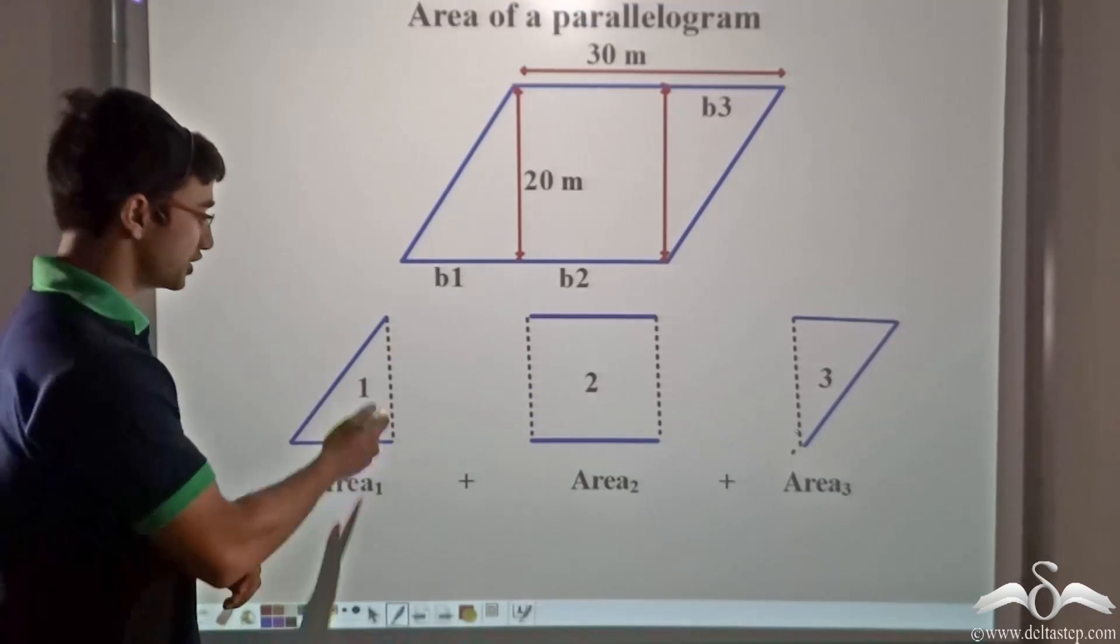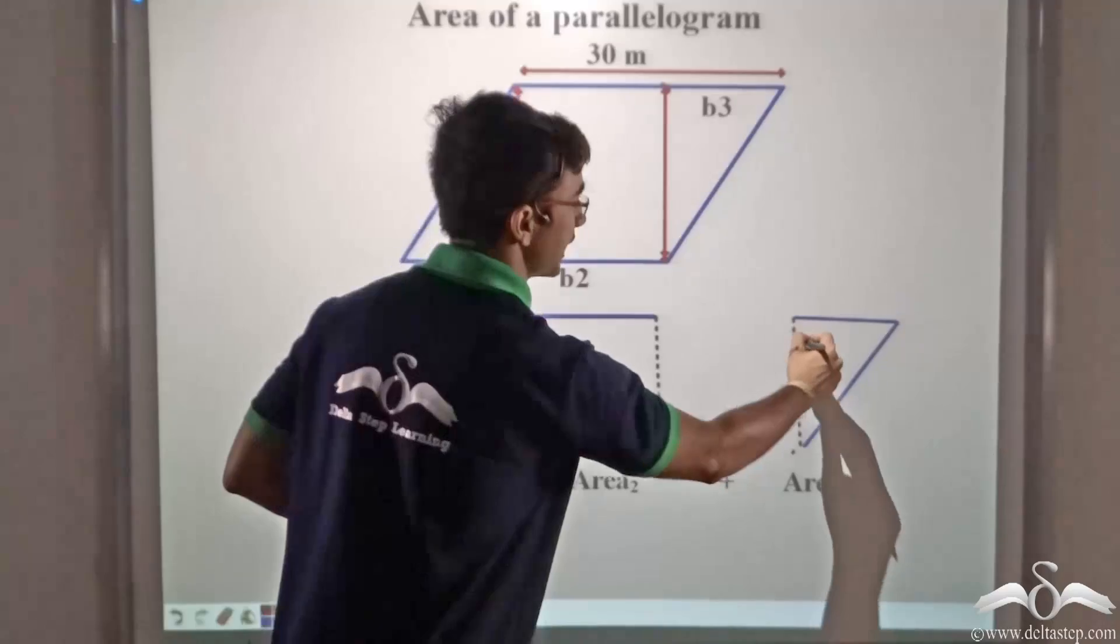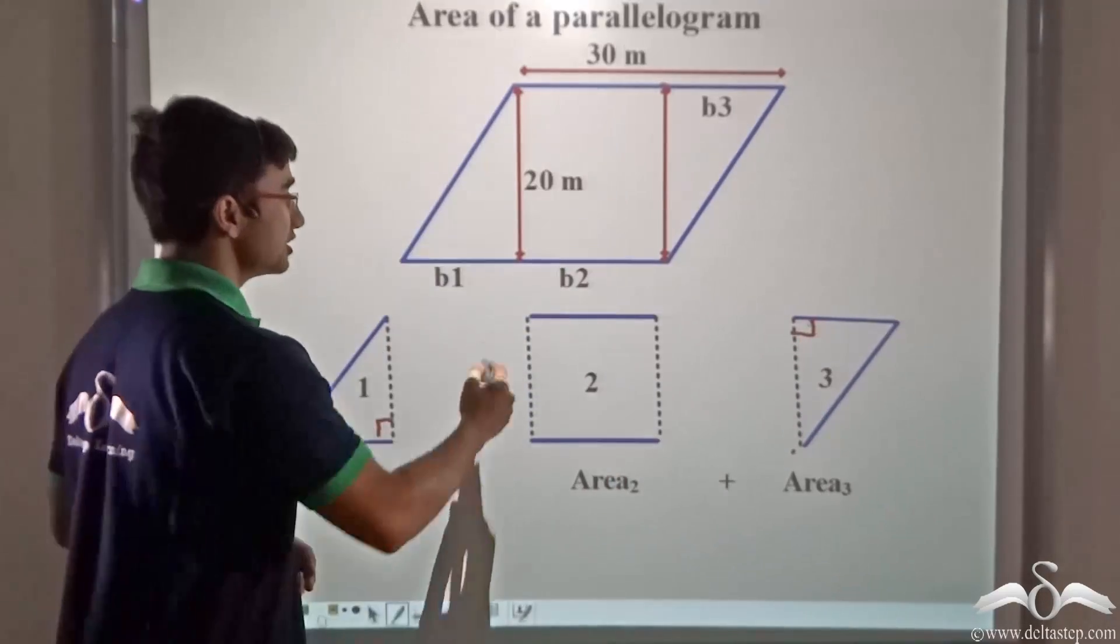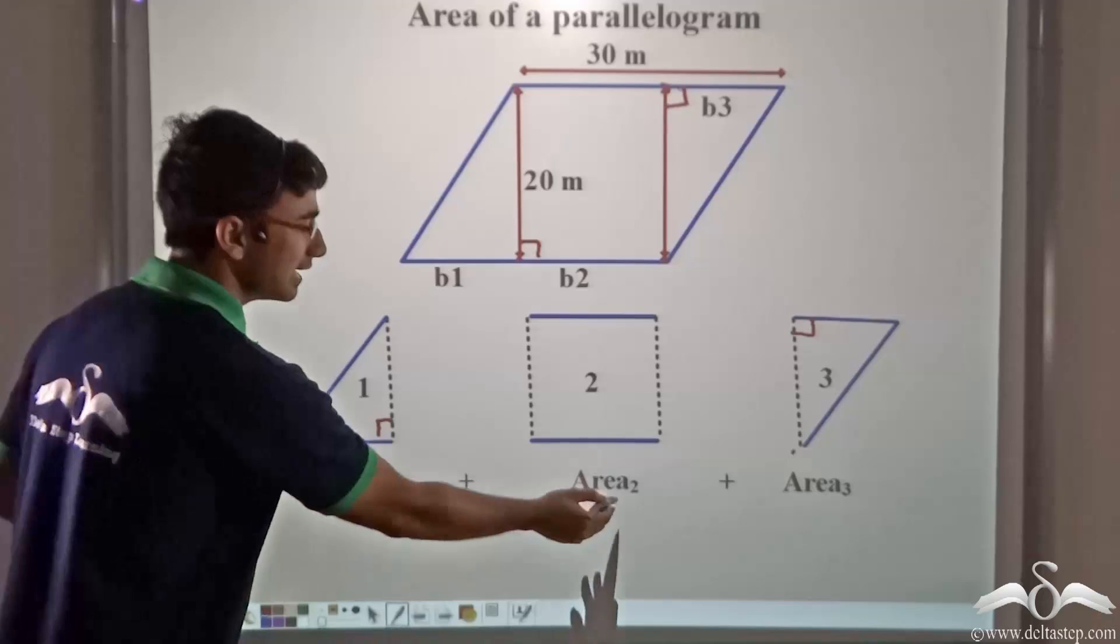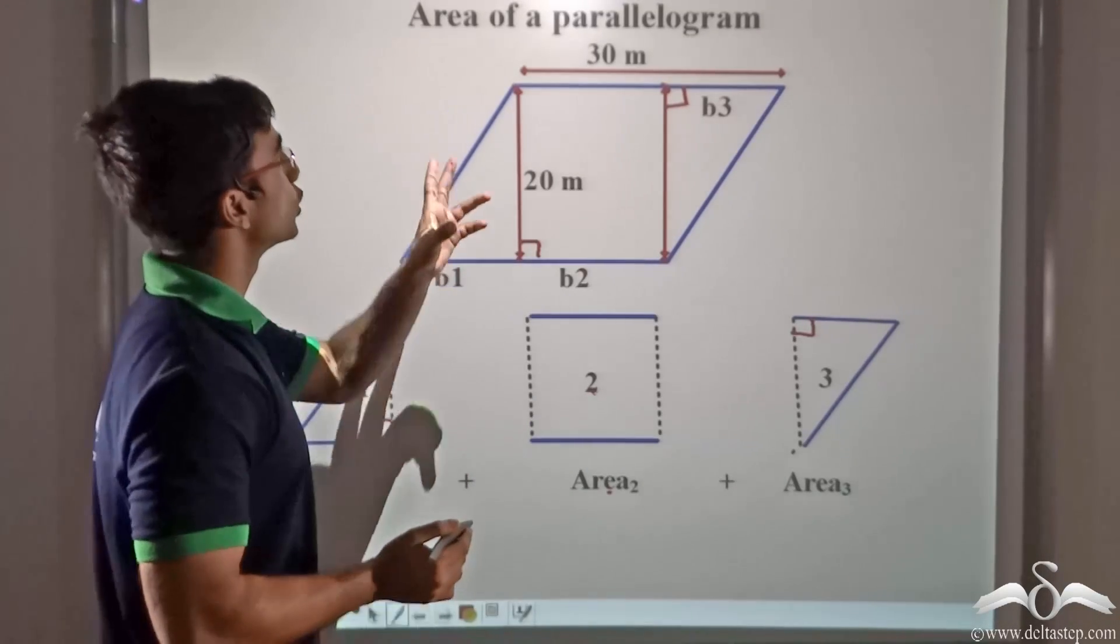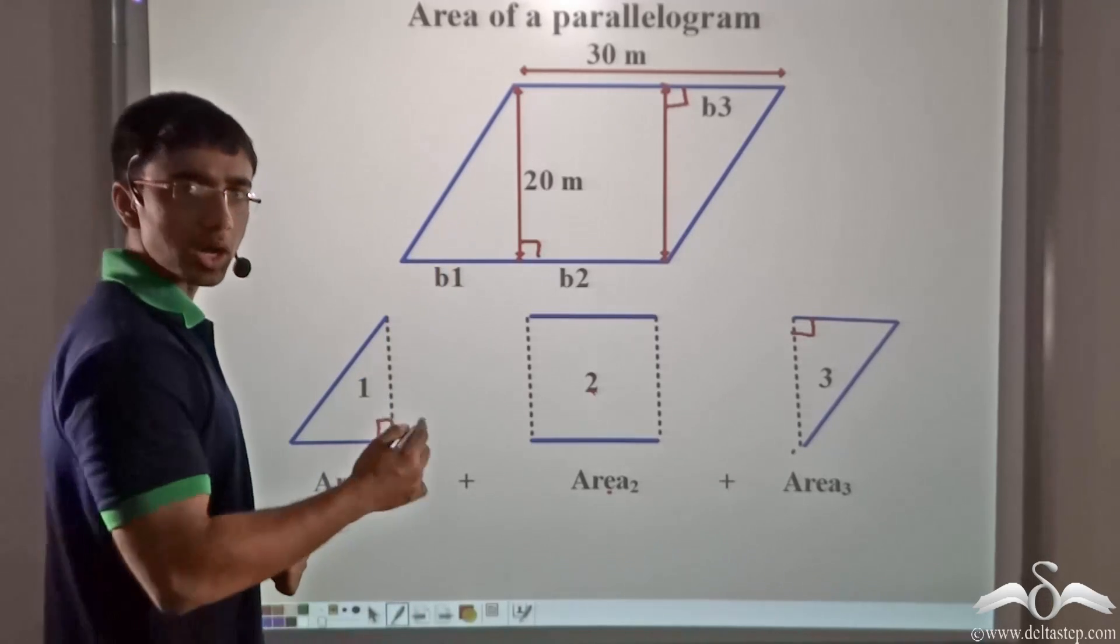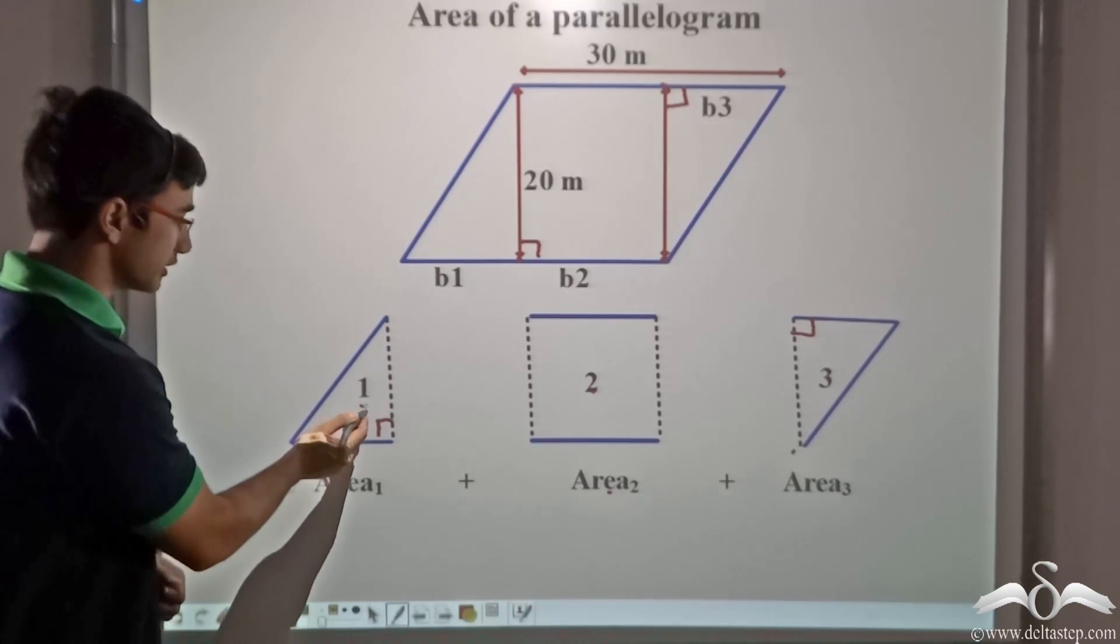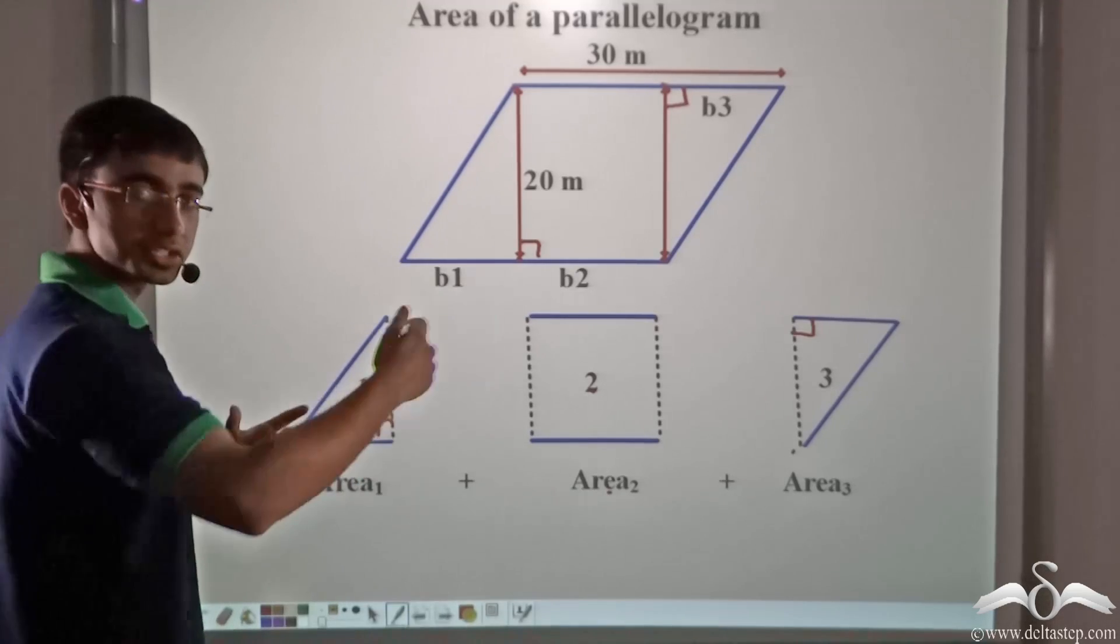Now if you observe closely, triangle one and triangle three are right angle triangles because as I mentioned we have dropped perpendiculars on these points, and figure two is a rectangle. Now over here we have to find out the area of the parallelogram. So how can we do that? For this we have to sum up the areas of the individual figures we have obtained.